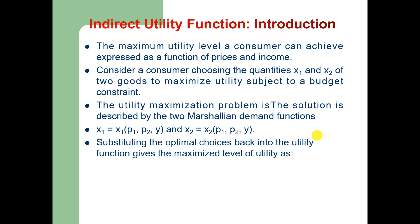If we substitute the optimal choices X1 and X2 back into the utility function, it will give rise to the maximized level of utility as follows: V is a function of price of good one, price of good two, and income, and that is equal to the utility function evaluated by substituting the optimal choices of the two Marshallian demand functions X1 and X2.